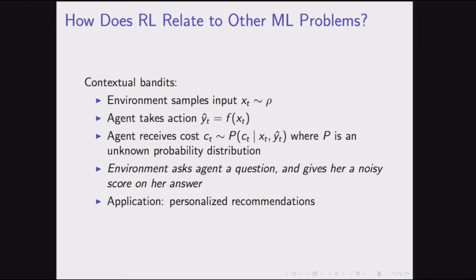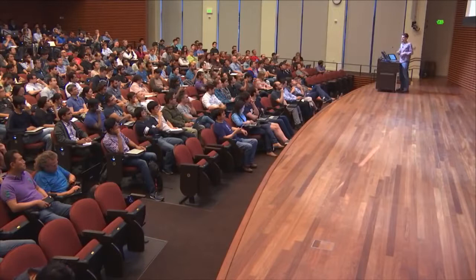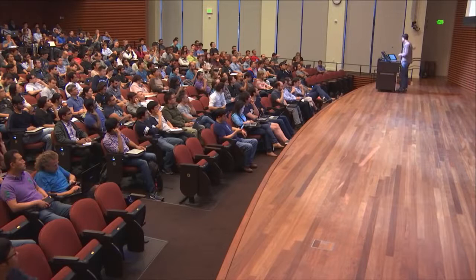In advertising, you have a customer and know what they liked in the past, so you predict what they'll like in the future — showing appropriate ads or links. The key difference from supervised learning is you don't have access to the loss function you're trying to optimize; you can't differentiate through it. We don't know the process that generates the cost c, so we can't compute the gradient and use it to tune the agent's parameters.